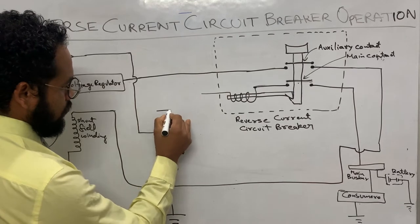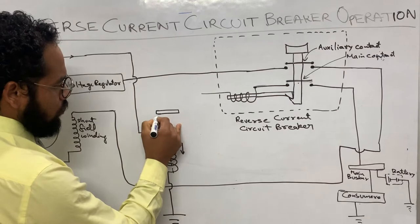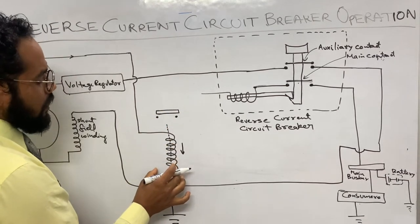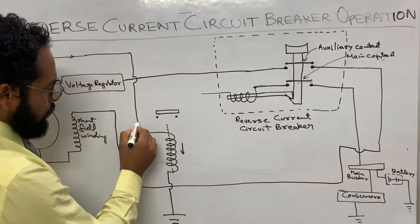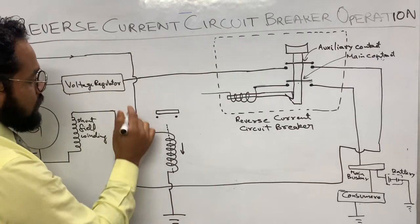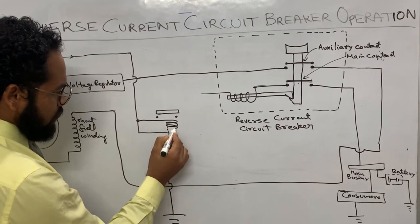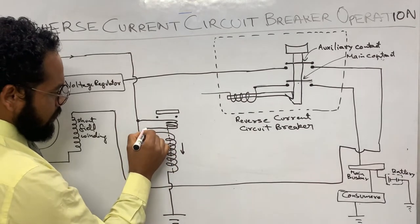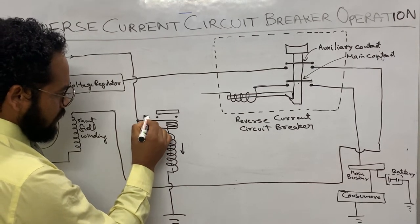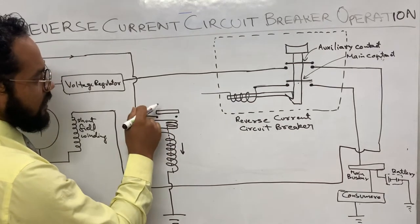This is a heavy-duty contact — it closes two points when this voltage coil is energized. In addition to the voltage coil there is another coil: the current coil. The current coil has only a few turns of thick wire. One terminal of this current coil connects here and another terminal goes onward to be explained later.